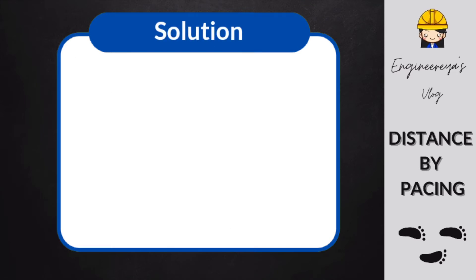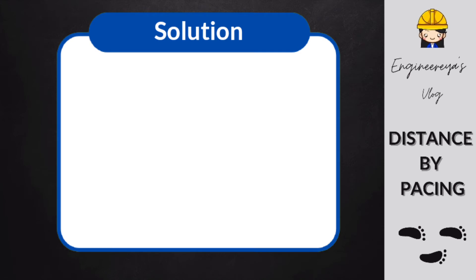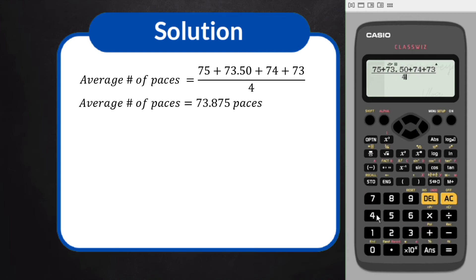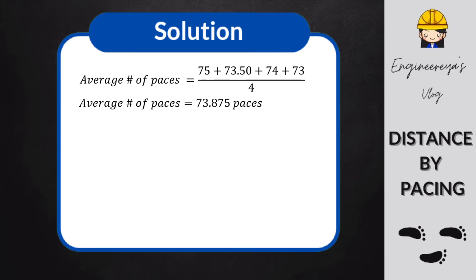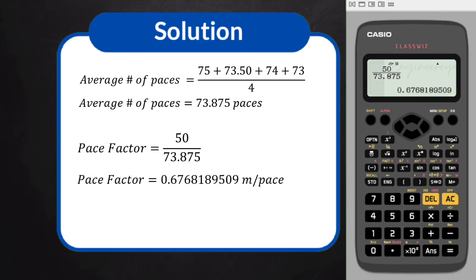Here is the solution for this example. The formula is: pace factor equals distance divided by average number of paces. Let's solve first the average number of paces: 75 plus 73.50 plus 74 plus 73, divided by 4. The average number of paces is equal to 73.875 paces. Now let's compute the pace factor — substituting the values: pace factor equals 50 divided by 73.875, which gives 0.6768189509 meters per pace.